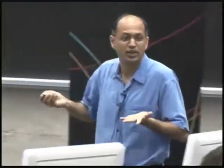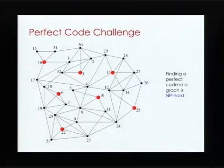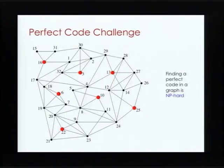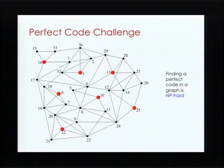Here's one of the answers — there might be more than one. If you want to write this down, the perfect code I found for this graph has nodes: 3, 6, 10, 16, 22, 25, and 13.